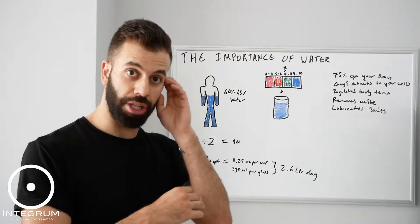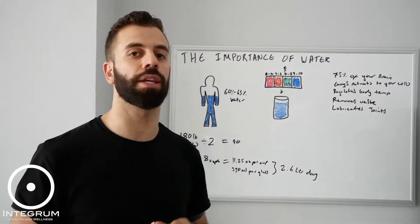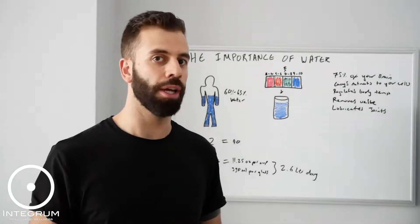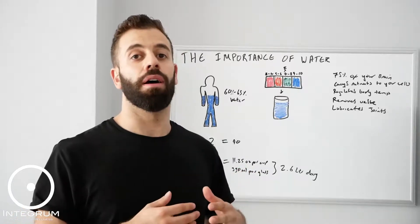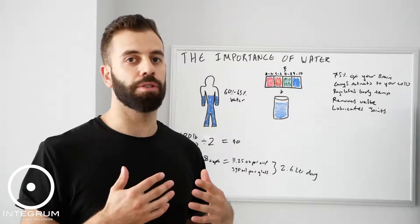So this equation here is to determine how much you should be drinking based upon your weight. If you're a child, much smaller, or if you're a very big, large human, then it's going to vary depending on this.